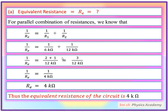LCM لیتے ہیں تو 12 kilo ohm آئے گا۔ 6 kilo ohm سے divide کریں تو 2 آئے گا، 2 ones are 2۔ 12 kilo ohm سے divide کریں تو 1 آئے گا۔ تو 2 plus 1 = 3 over 12 kilo ohm آ گیا۔ 3 سے 12 کو divide کریں تو 1 over 4 kilo ohm بنتا ہے۔ اس لیے Req = 4 kilo ohm۔ That's the equivalent resistance of the circuit is 4 kilo ohm.